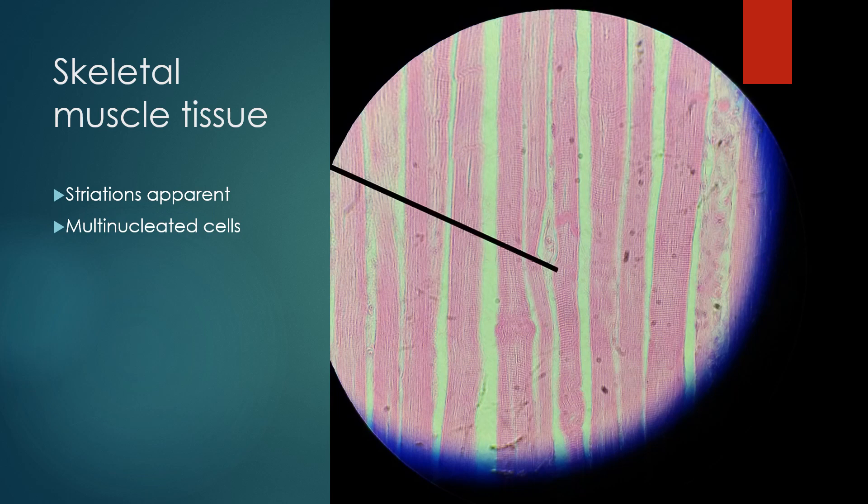Number three was skeletal muscle tissue. This is a longitudinal section of skeletal muscle tissue. To tell whether it's skeletal versus cardiac versus smooth, the first thing I'd suggest looking for is the presence of striations, and this sample does have striations. These fine little lines that bisect these longitudinal muscle fibers are striations, telling you that you either have skeletal muscle or cardiac muscle.